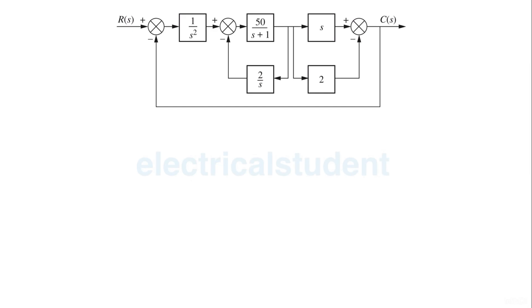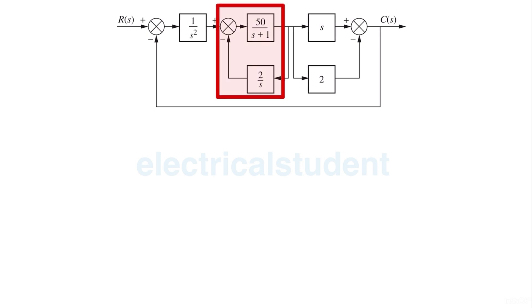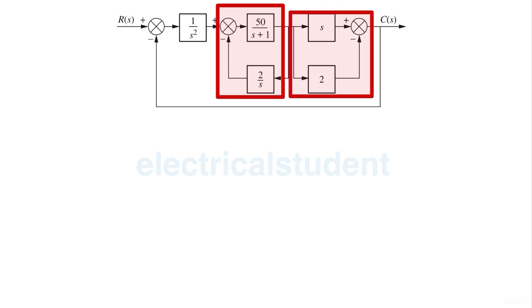This is a block diagram reduction technique problem. We can easily identify one feedback loop and one parallel path, so we can simplify these two things.